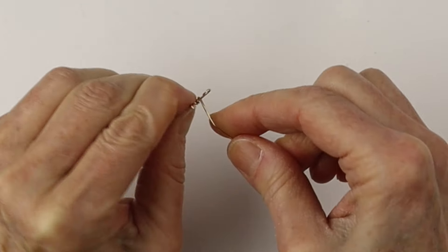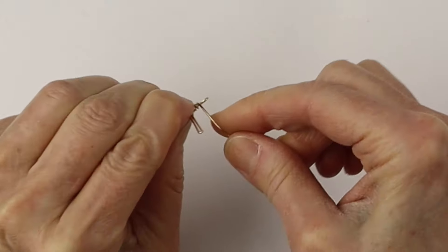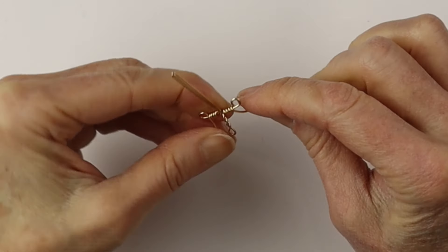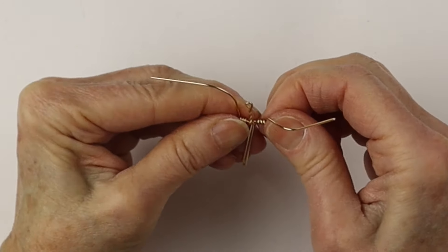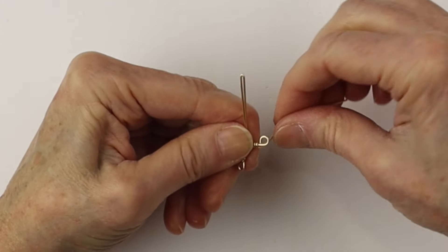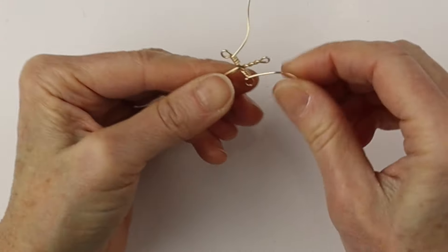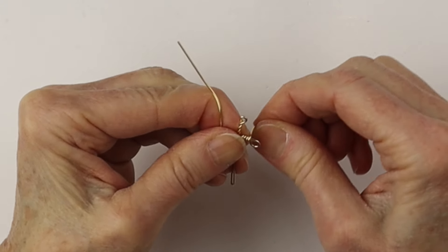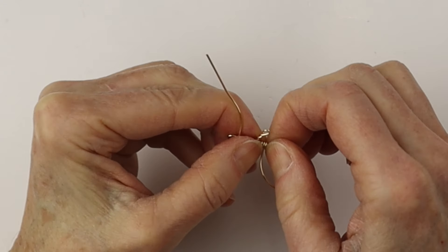And adding another twist if you want, depends on how much wire you have, how much space you have. Keep adjusting it as you go. Decide to do another little round there, as long as it's even on both sides.